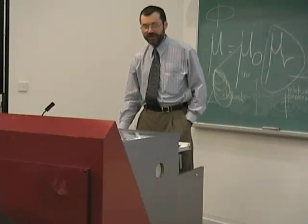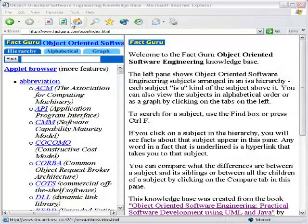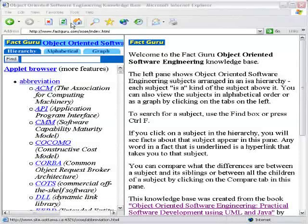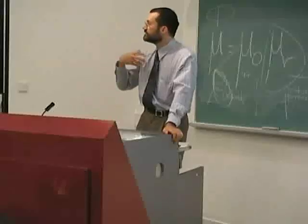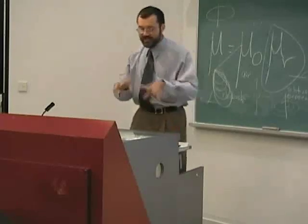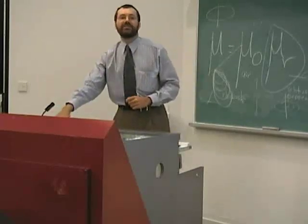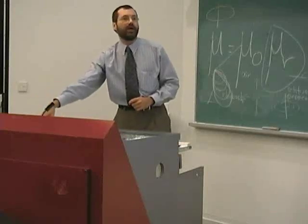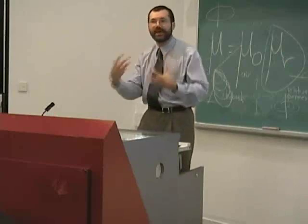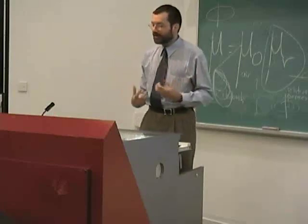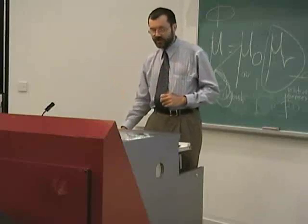The second useful resource on this website is a knowledge base which contains all the concepts found in the book. On the left-hand side, if you scroll down, you'll see a long list of software engineering-oriented terms and words. Click on any one of those and you'll find detailed information about that concept. This is based on the material in the book — I had a knowledge engineer extract all the information and put it on the web as little factoids or pieces of knowledge, and it's all hyperlinked.